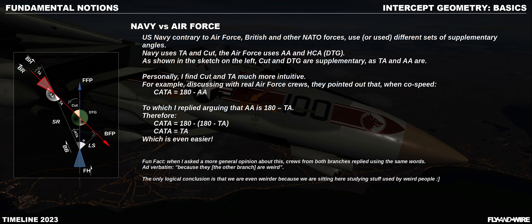A quick and funny parenthesis before closing: as I started studying various documentation, I noticed how the US Navy and US Air Force use similar concepts but not the same angles — each agency uses the supplementary angles of the other. The Navy uses TA and used to use CAT; the Air Force uses AA and, I suppose, is still using DTG. It would be interesting to go deeper into the historical and practical reasons for these different approaches, but that's a topic for another video.